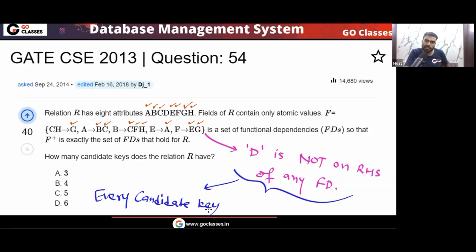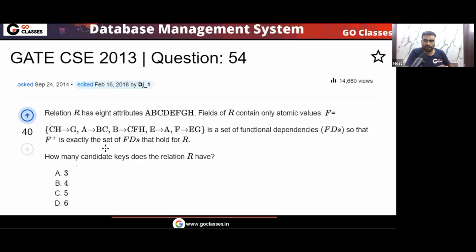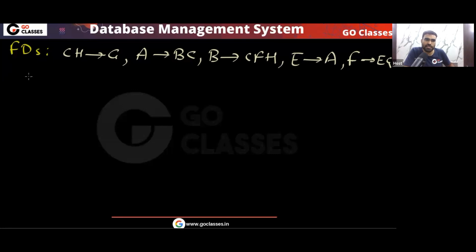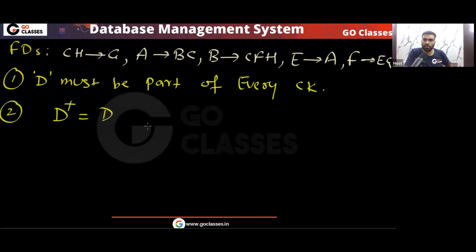Since D is not on the RHS of any FD, every candidate key must contain D. Only D can derive D — no one else can. So that is the reason every candidate key must contain D. Now, is D alone enough? D can only determine D, so D is not enough. Your next step: with D, you add one more attribute.